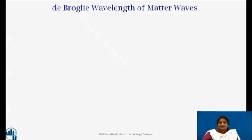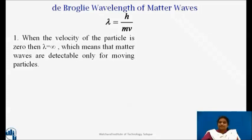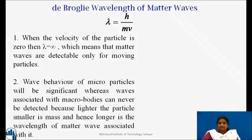So, the conclusion can be made from the equation lambda is equal to h upon mv. When the velocity of the particle is zero, lambda is equal to infinity, which means that matter waves are detectable only for moving particles. Wave behavior of microparticles will be significant whereas waves associated with the macro bodies can never be detected because lighter the particle, smaller is mass and hence longer is the wavelength of matter waves that is associated with it.